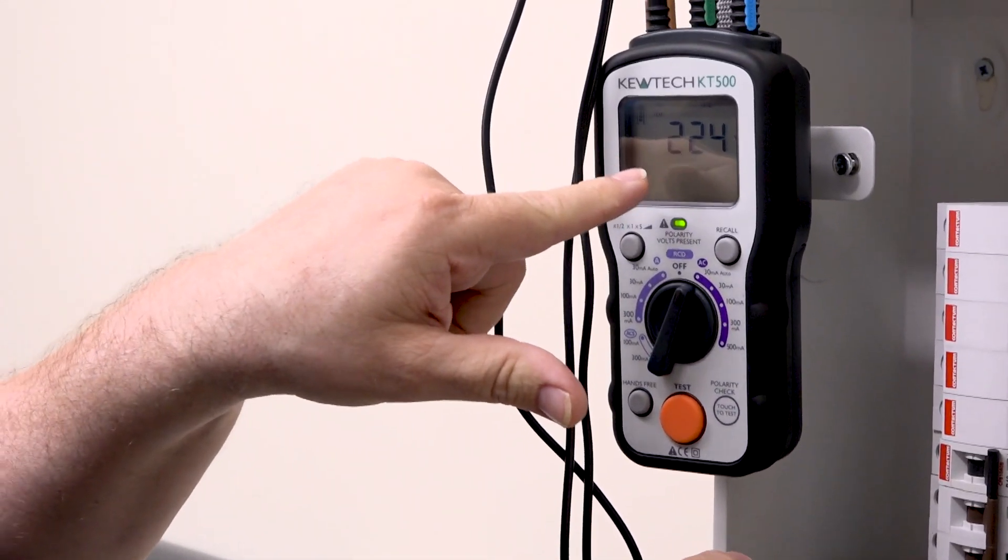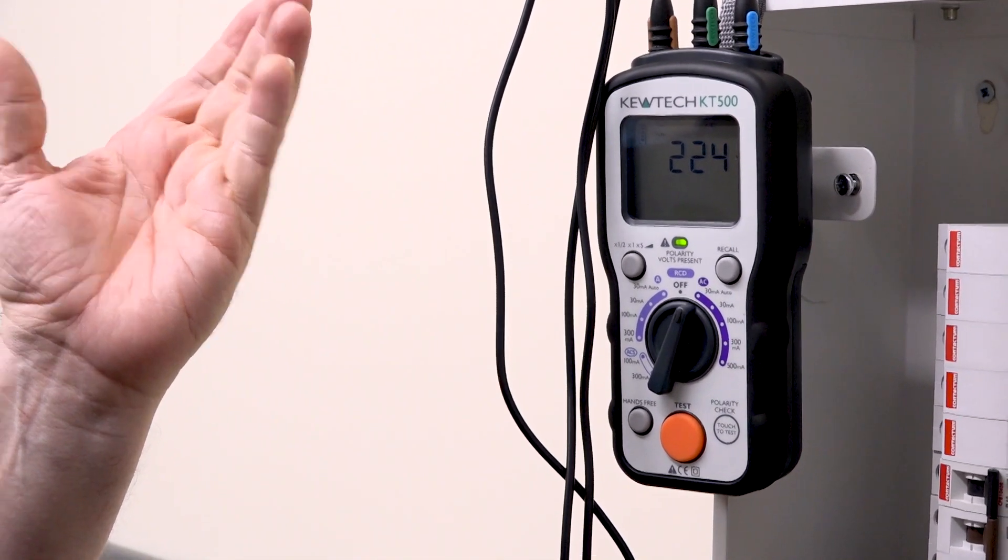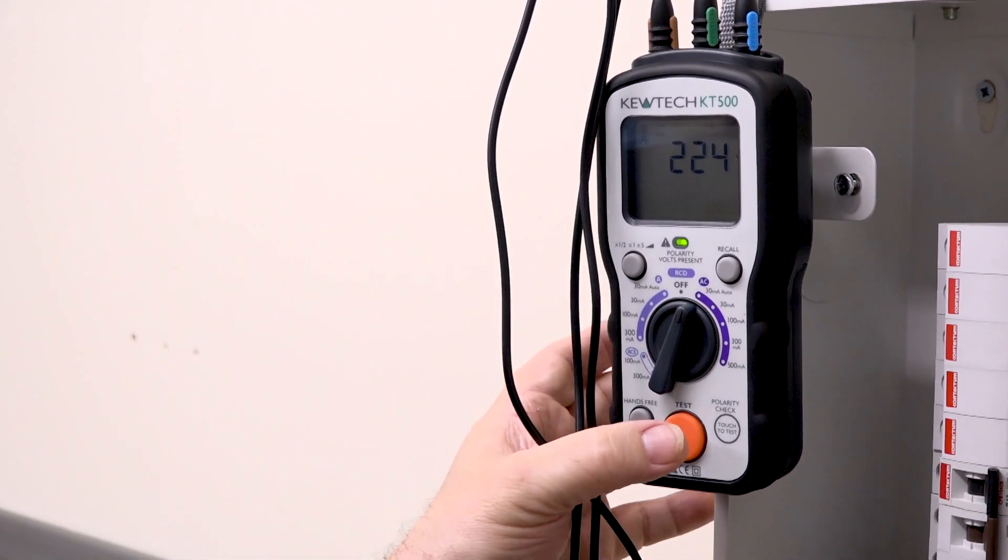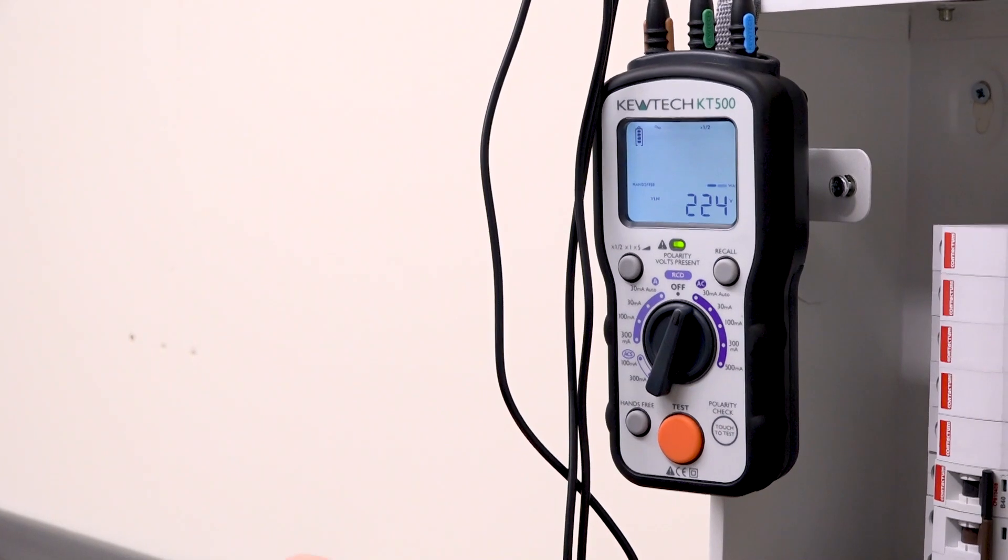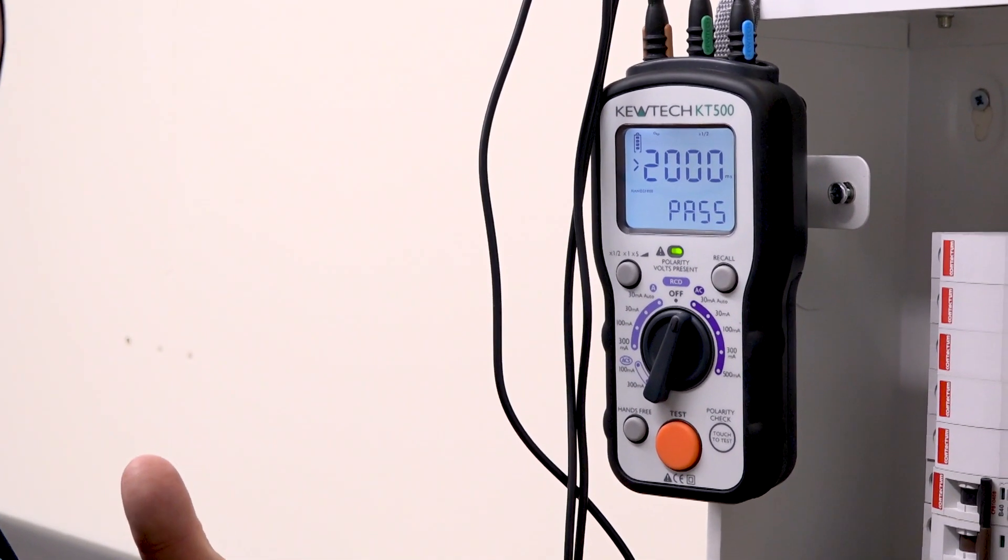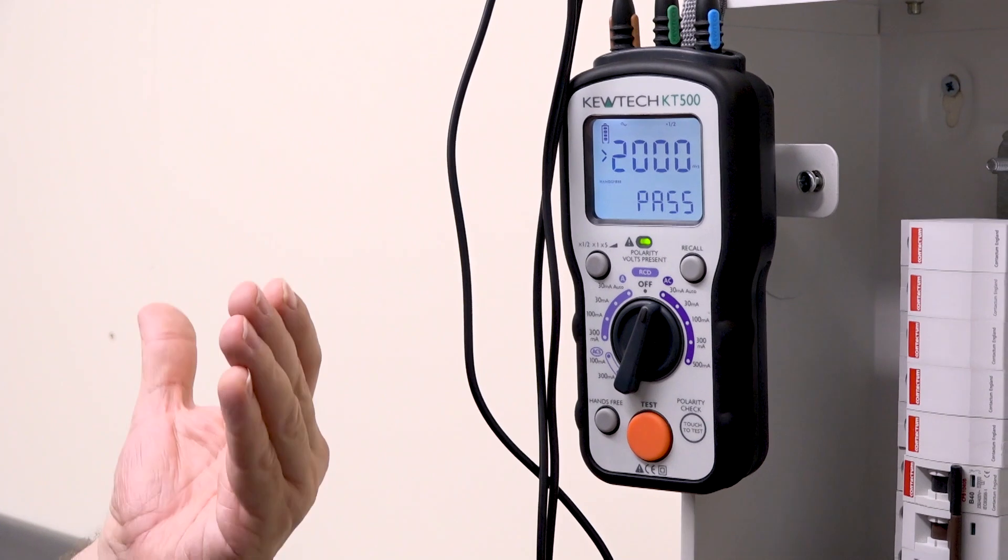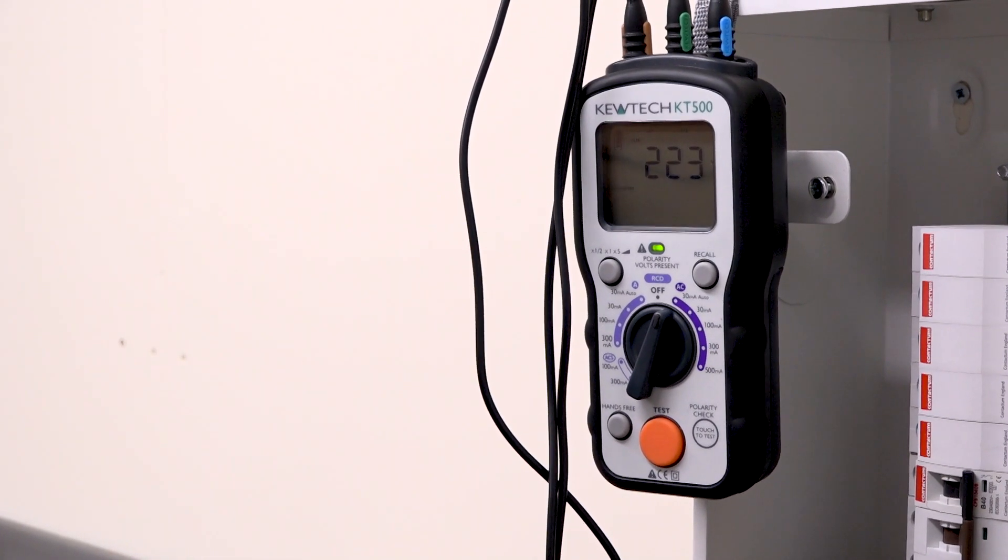And as we can see, displaying the voltage there—224, 223. All we simply have to do, because we're in the auto mode, is press the test. It'll go through the six tests, which is times half at zero degrees, times half at 180 degrees, times one...